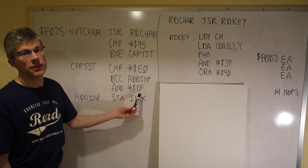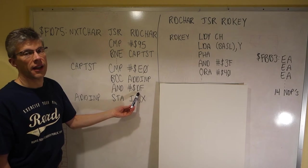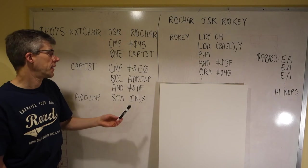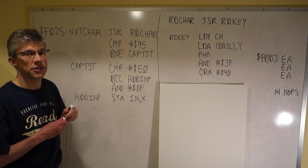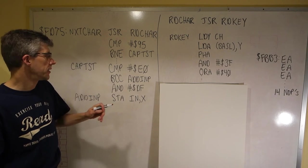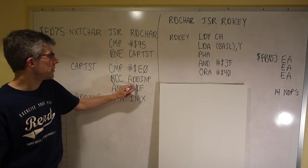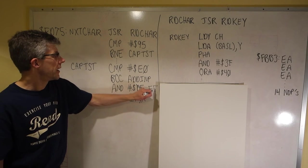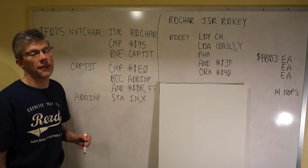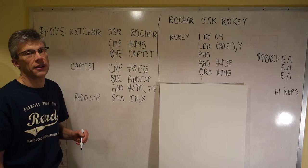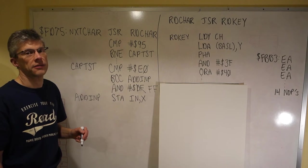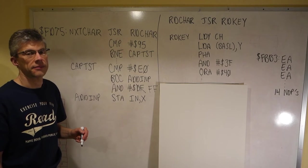The first thing we need to do is fix it so it doesn't convert lowercase to uppercase. The easiest way to do that is just change instead of DF, we're going to make this an AND with FF. This will just have the effect of a NOP and so this will just cause nothing to happen and it won't actually convert the lowercase to uppercase.